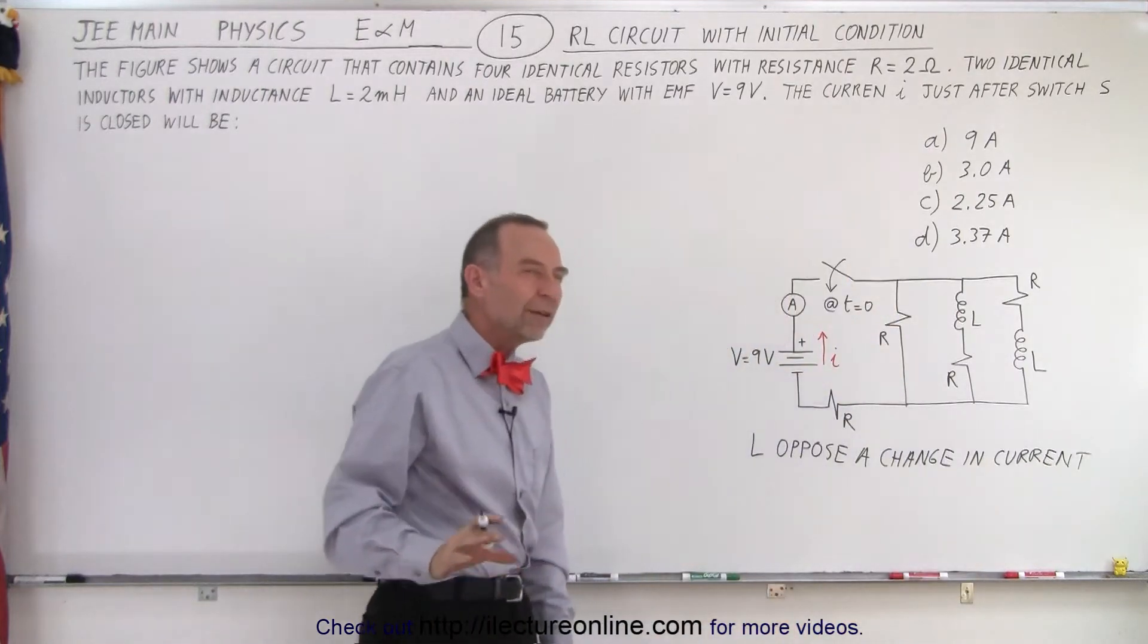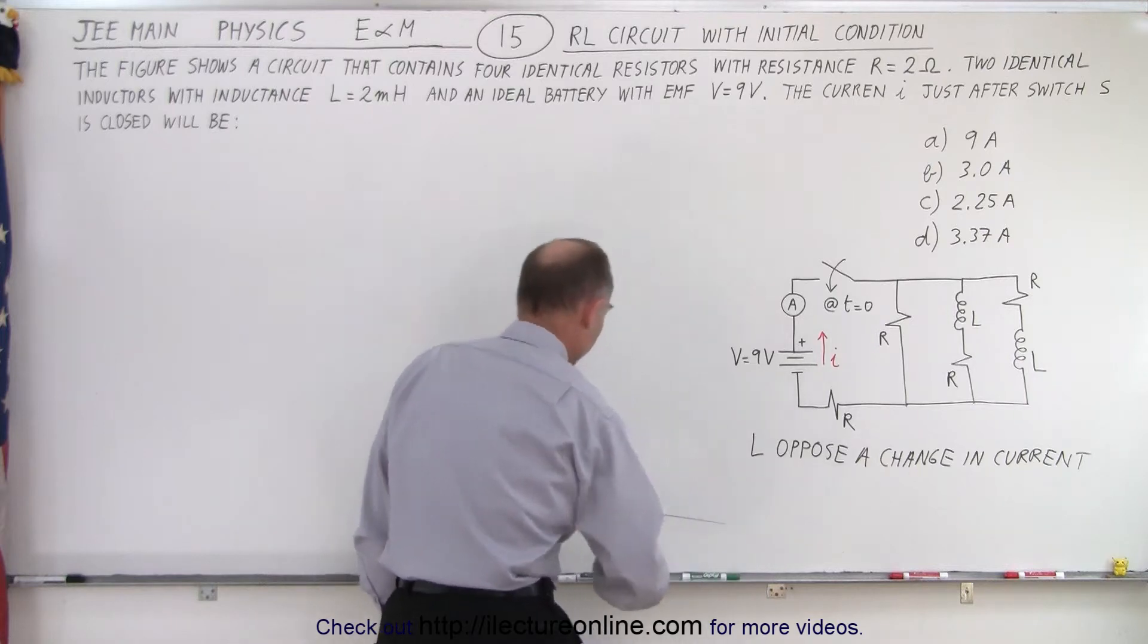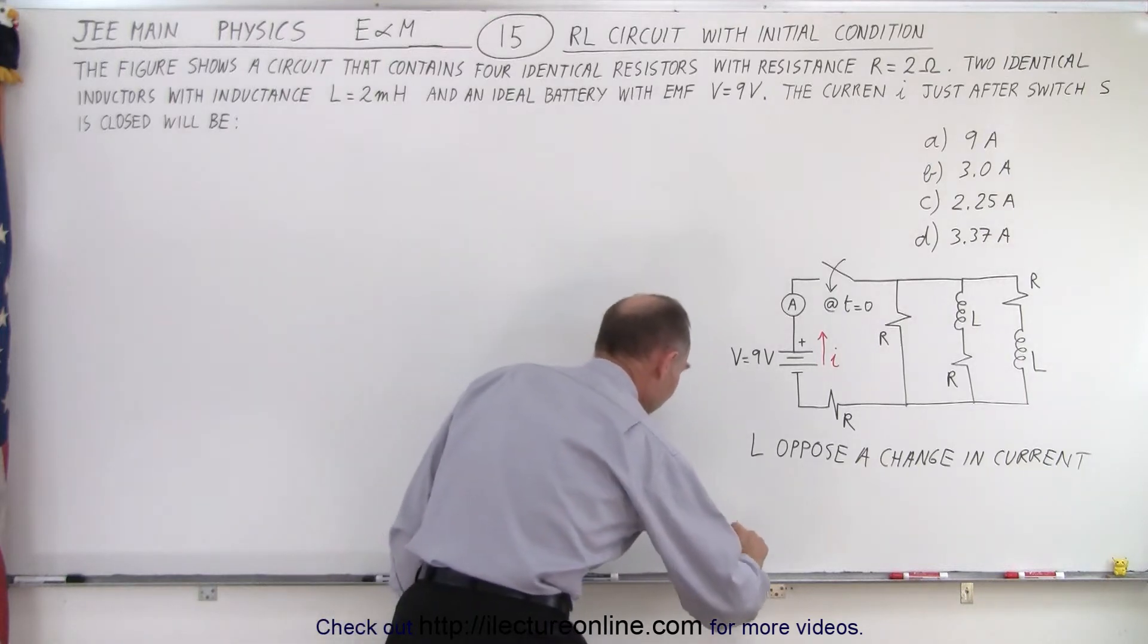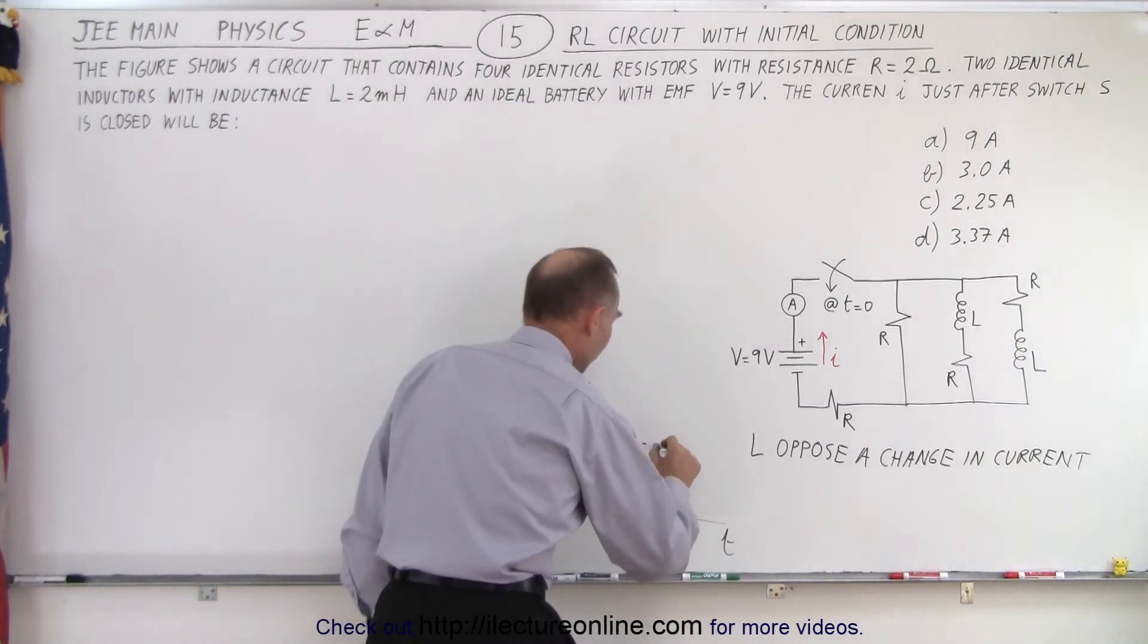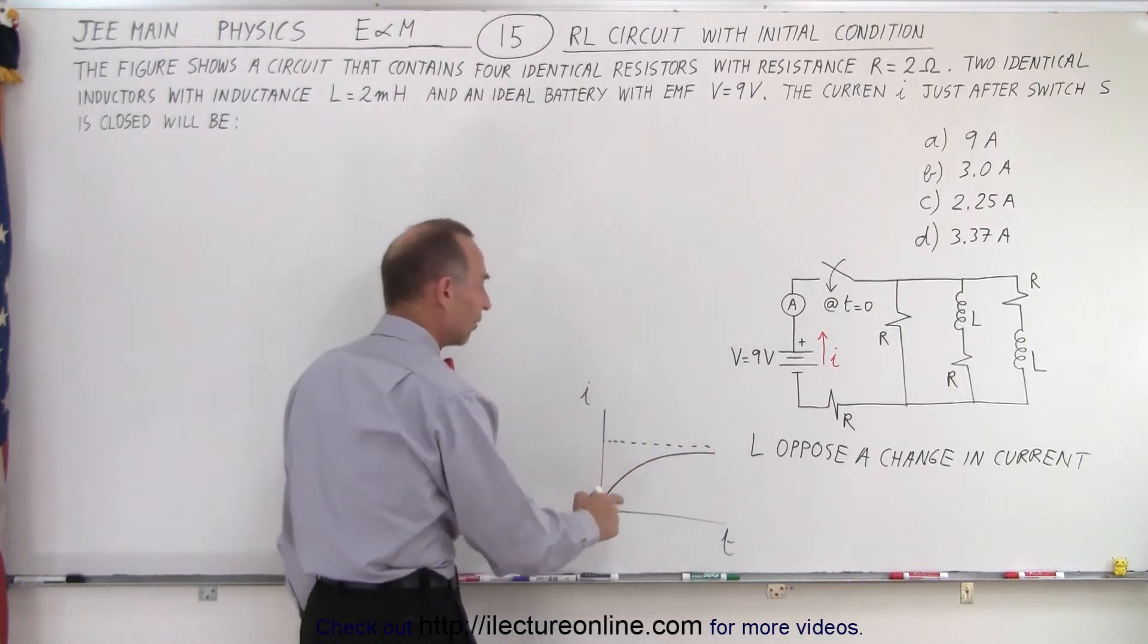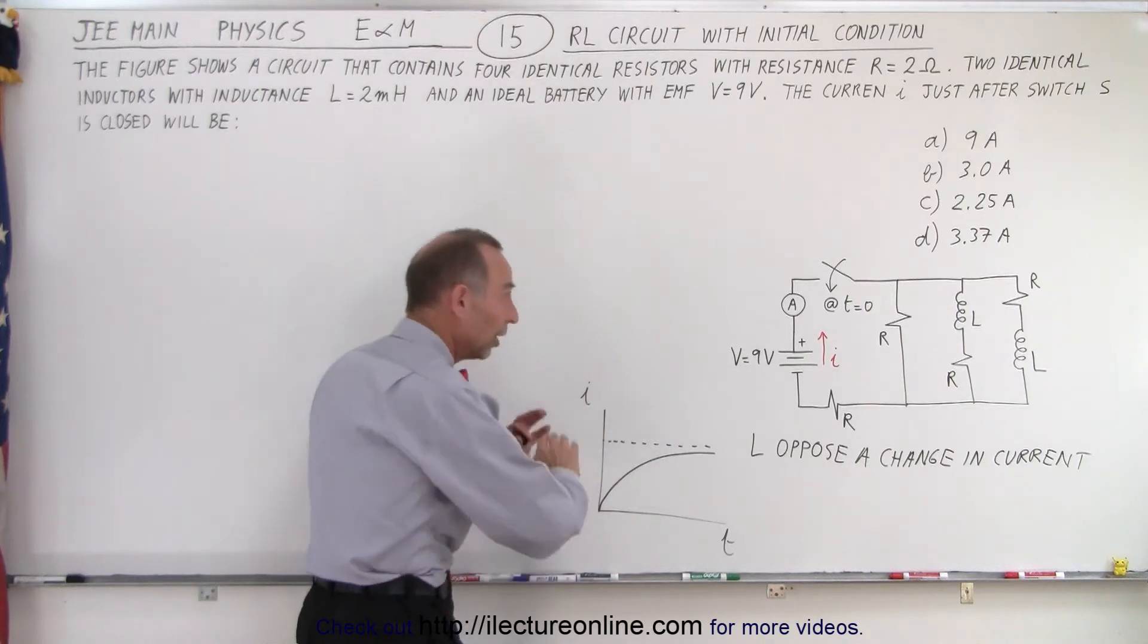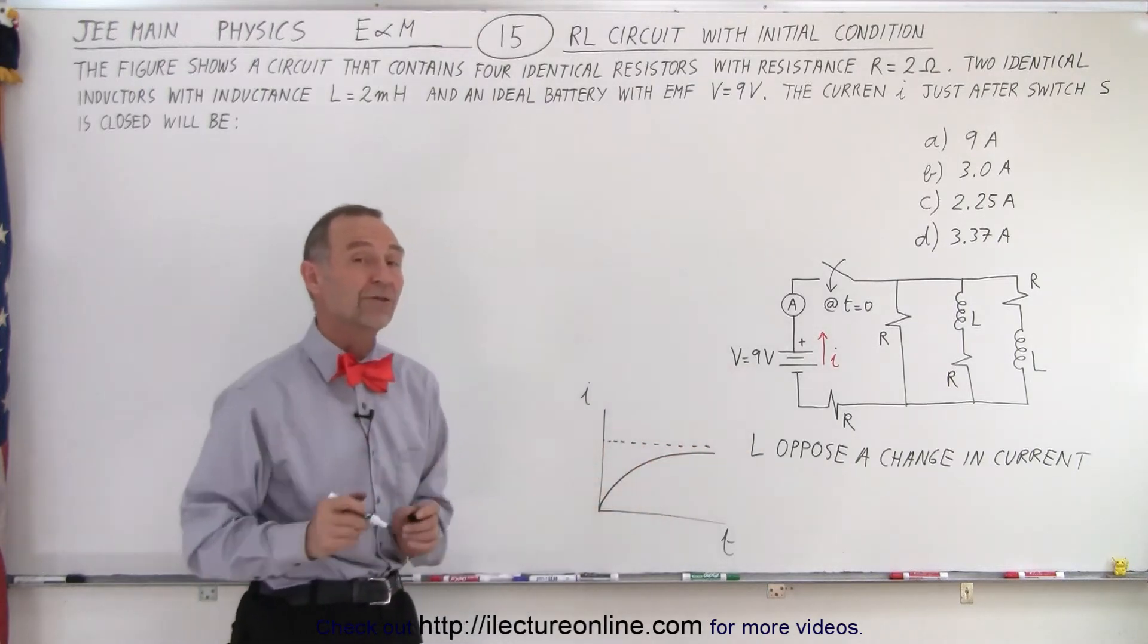Which means that if we were to draw a current versus time graph for an inductor, we get I versus time. Notice there will be some final current, but this is what an I versus T graph looks like for an inductor, which means that the moment the switch is closed, at that very moment, there's no current flowing through the inductors.